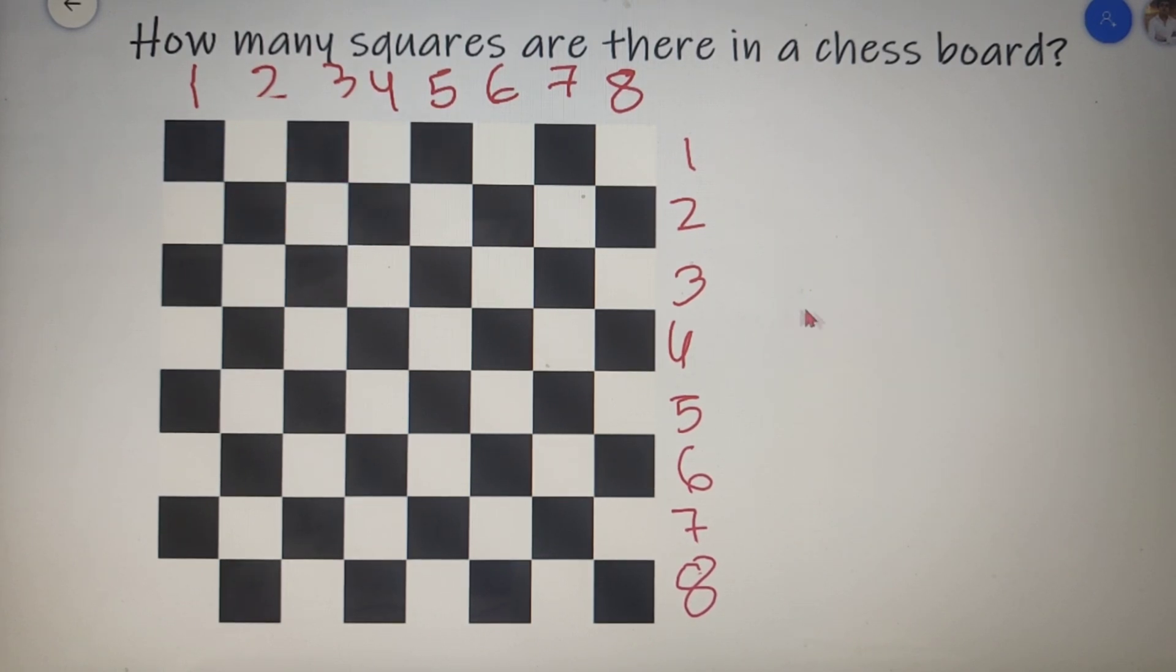So by following this pattern, I can say that the total number of squares in a chessboard is equal to 8 square plus 7 square plus 6 square and all the way up to 1 square which is the whole chessboard itself. So upon calculating, you will find that the total number of squares in a chessboard is equal to 204.